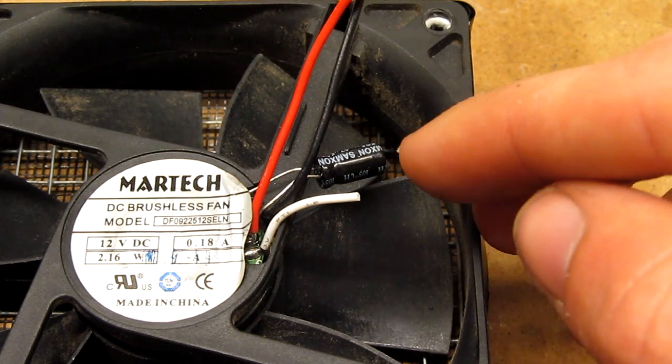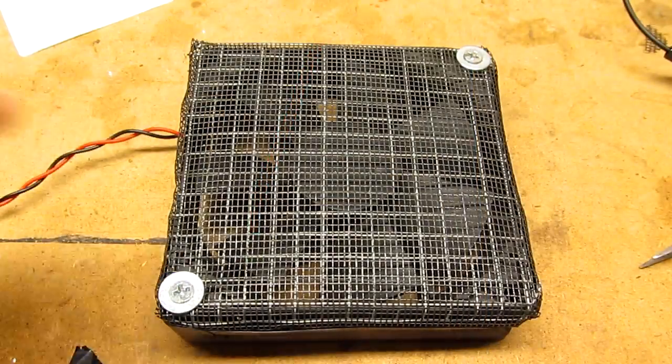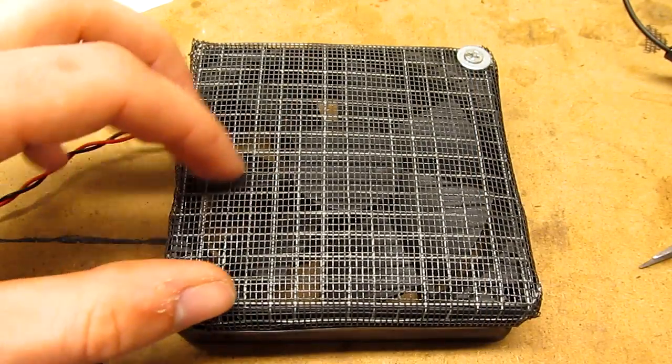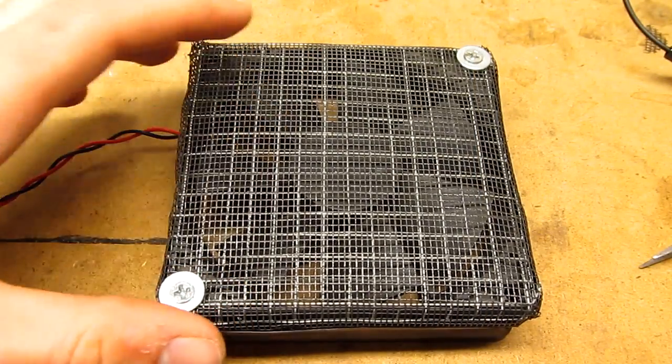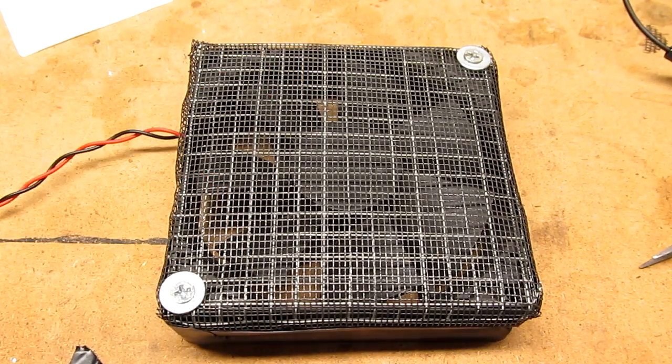Got the little 47 microfarad capacitor soldered directly onto each fan. A piece of hardware cloth with some fiberglass window screen over it will protect the fan blades from any debris and keep the larger pieces of dust out.